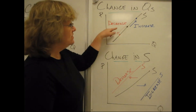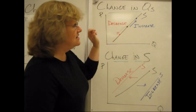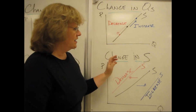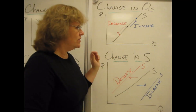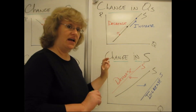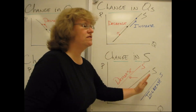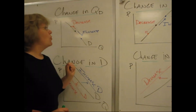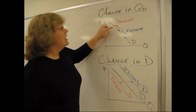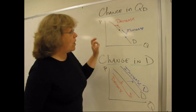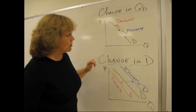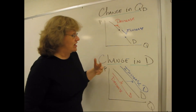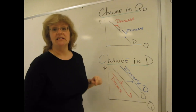So a decrease or an increase in quantity supplied means a movement along the curve. A change in supply — a decrease or an increase in supply, leaving out the word quantity — is a shift of the whole curve. Similarly, with the demand curve: a decrease or increase in quantity demanded is a movement along the curve, while a decrease or increase in demand — a change in demand — is a shift of the entire curve.